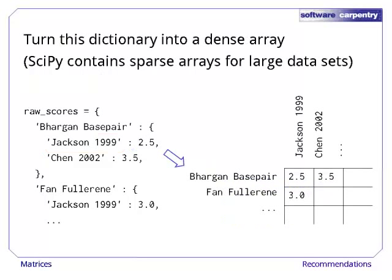We want to turn this data into an array. In the real world, this array contains almost all zeroes for all papers that an individual didn't rank. SciPy contains a sparse array class that doesn't store those zeroes, but we will stick with NumPy for this example.